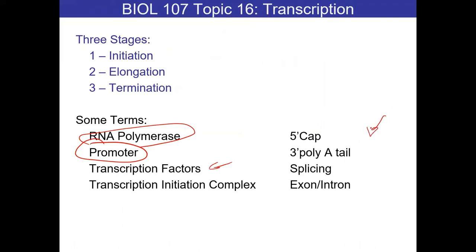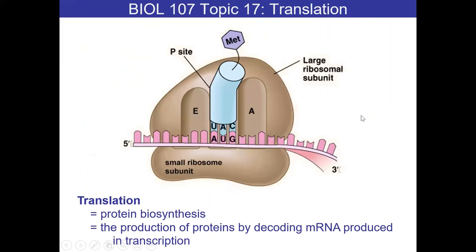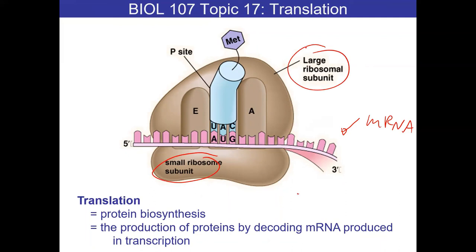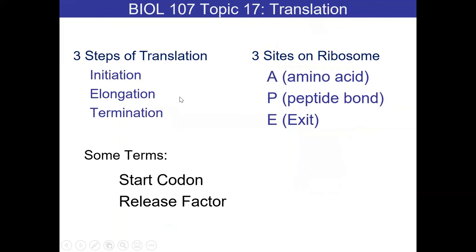Topic 17 was translation, which happens at the ribosome. The players are: messenger RNA, small and large ribosomal subunits, and transfer RNA attached to an amino acid. There are three sites - the A site, P site in the middle, and E site. Three stages: initiation, elongation, termination. We'll spend a little bit of time reviewing this on Wednesday as well.